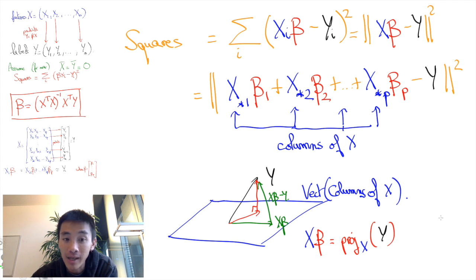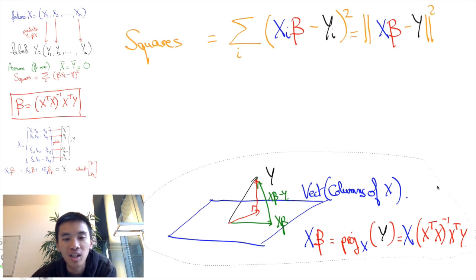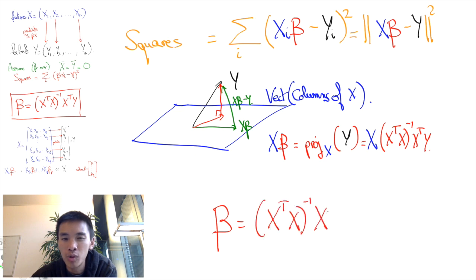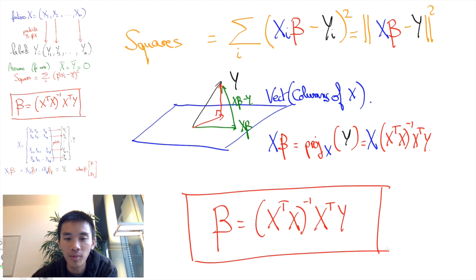This gives us the value beta equals the projection onto X of Y. Euclidean geometry tells us that this equals (X^T*X)^(-1) times X^T*Y. In other words, we get exactly the same equation as we did in the one-dimensional case, except that now X^T*X is actually a matrix. So (X^T*X)^(-1) is going to be the inverse of a p by p matrix.